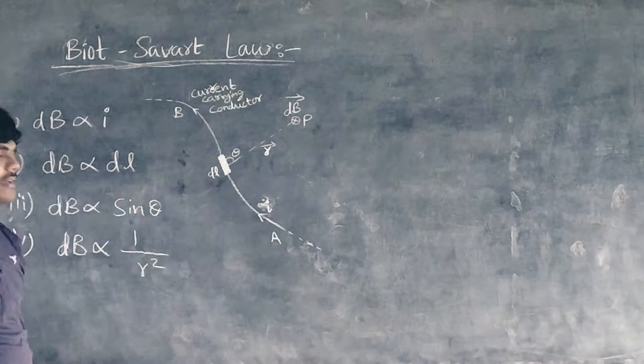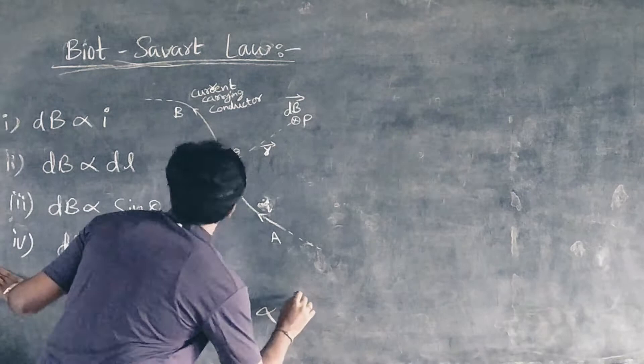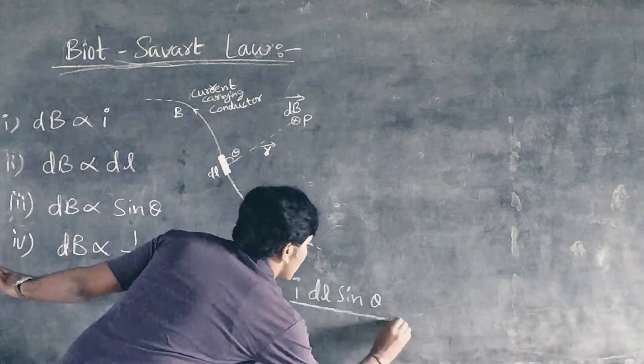Combining all these factors, we can write dB is proportional to I dl sin theta by r square.